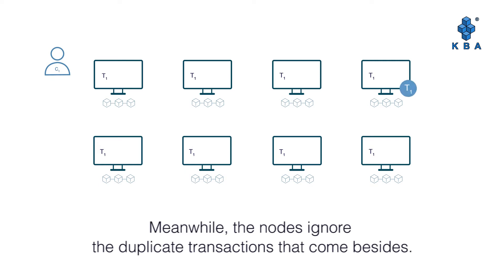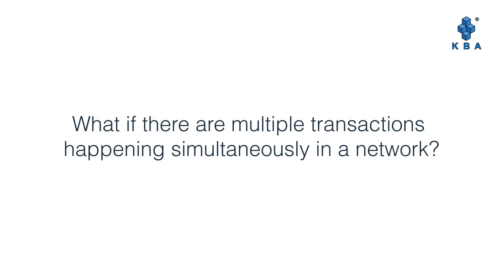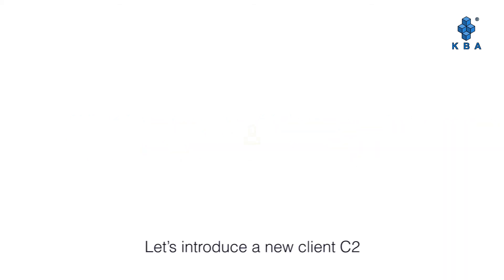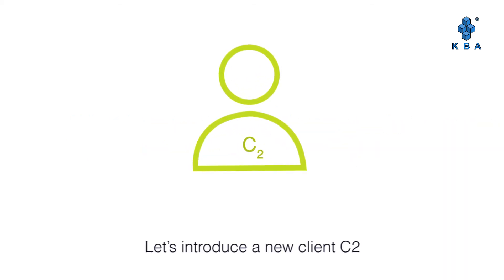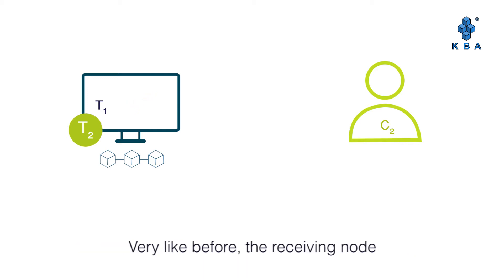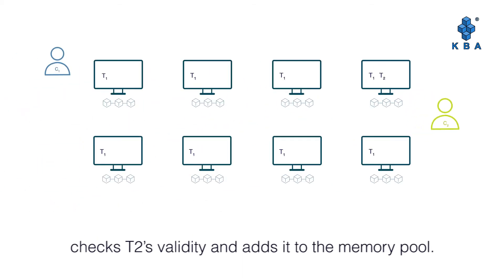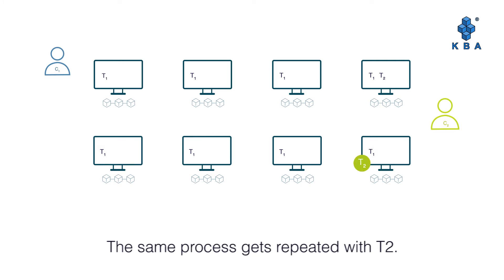Meanwhile, the nodes ignore duplicate transactions that come by. Every node has now received the transaction T1. What if there are multiple transactions happening simultaneously in a network? Let's introduce a new client C2. C2 sends a different transaction T2 to the network. The receiving nodes check T2's validity and add it to the memory pool. The same process gets repeated with T2.